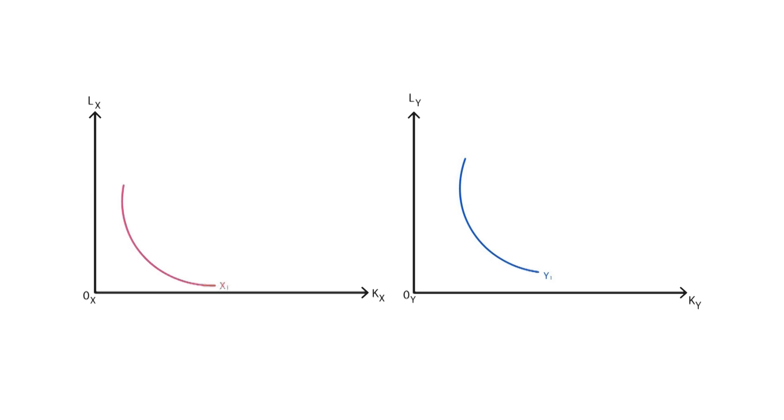The isoquants show the different combinations of inputs needed to produce a certain amount of a good or service. An increase in production will only come when we displace the isoquant curves outwards.